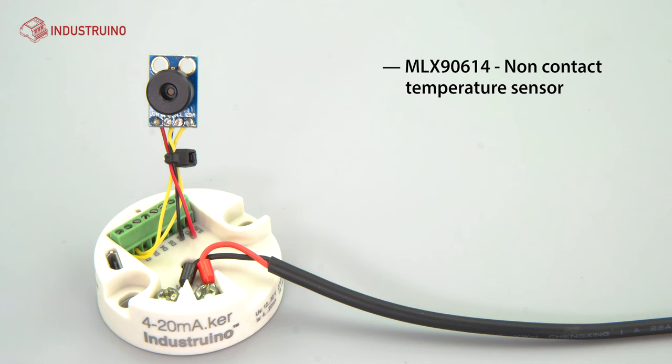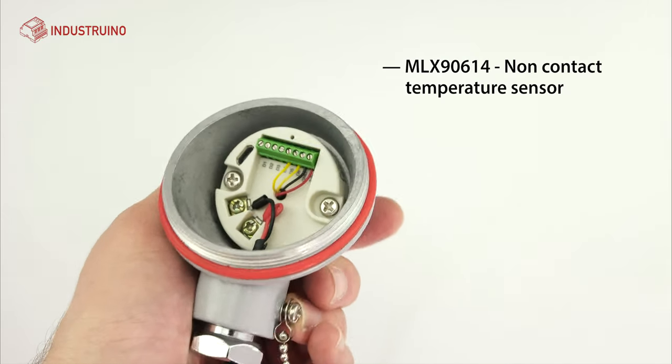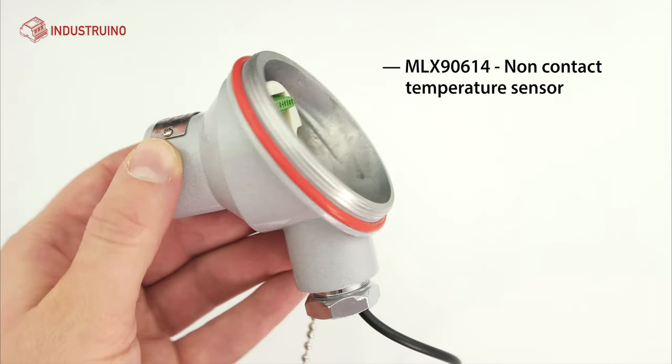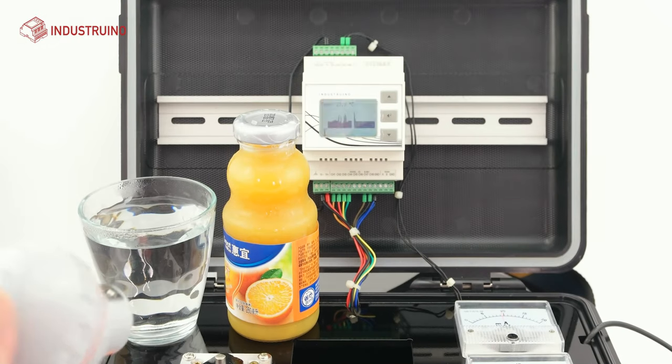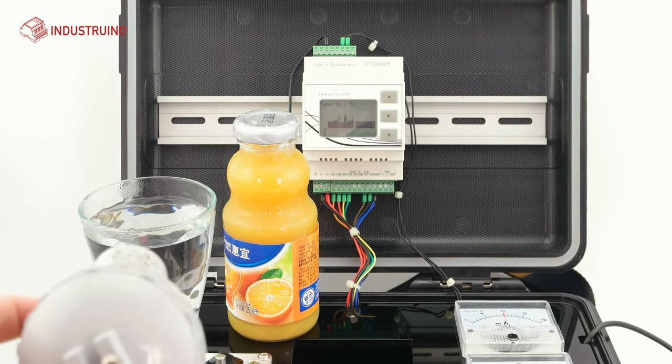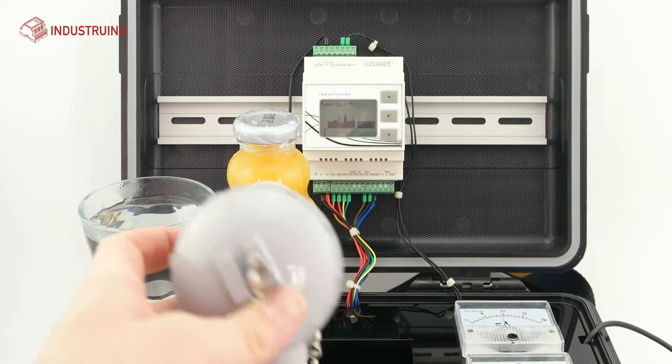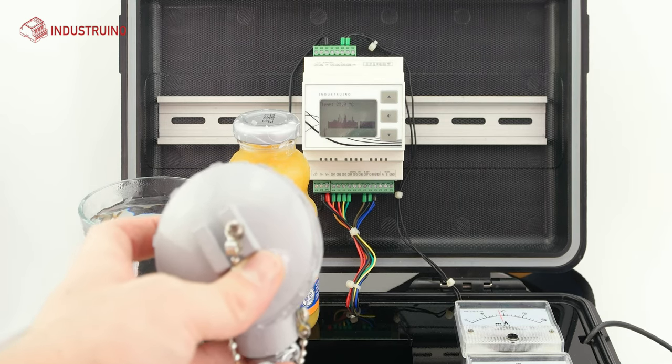The second example is the MLX9614 sensor, a non-contact infrared temperature sensor. As a demonstration, the sensor is pointed at a glass of boiling water and a bottle of cold juice. The temperature is read from the sensor by the MCU and mapped onto the 420mA loop.